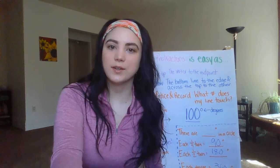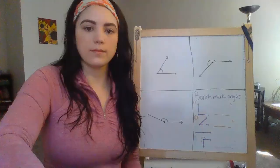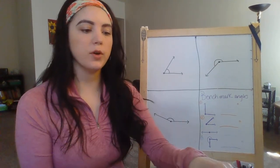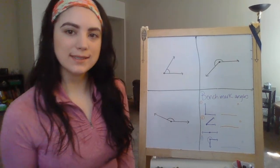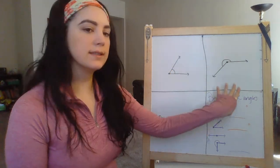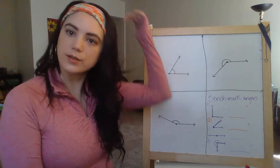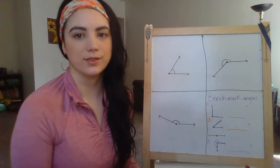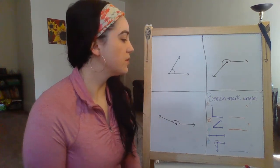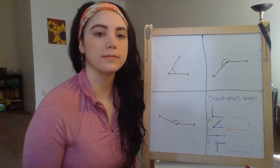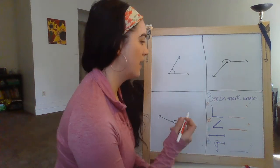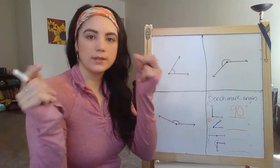Now we're going to drop into a little more practice. I've put some practice problems on this board — a few checks for understanding of how to use benchmark angles to estimate the degrees of an angle. We have three practice problems, and on this side a cheat sheet of benchmark angles to reference. The first angle should be familiar — it's a right angle. How many degrees is a right angle? If you said 90, you are correct.